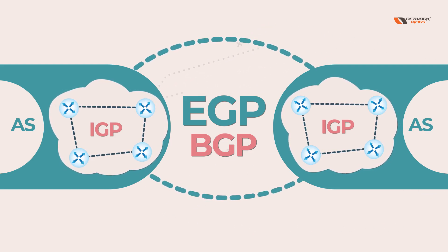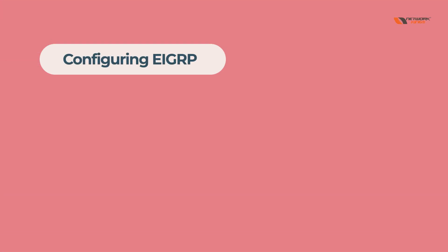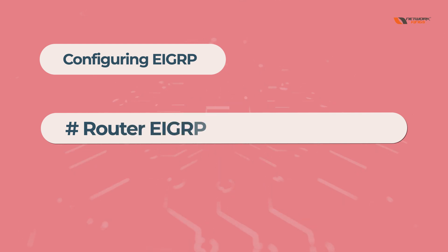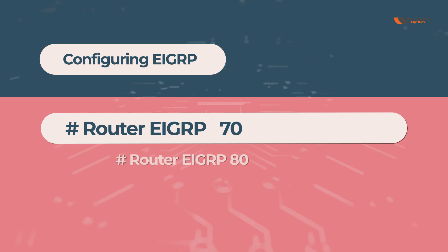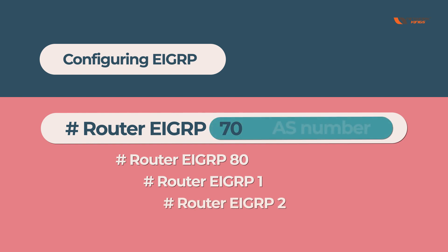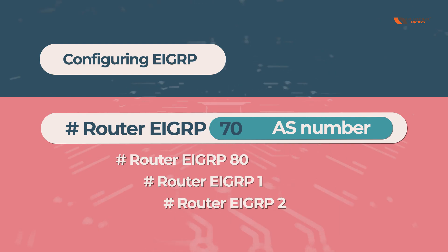When you configure EIGRP, the command is like: 'router EIGRP' followed by a number — for example, router EIGRP 70, or router EIGRP 1. This number is also known as the AS number in EIGRP.